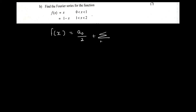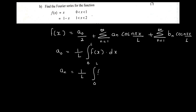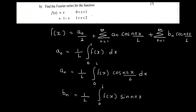f of x equals a₀ by 2 plus summation n equal to 1 to infinity aₙ cos(nπx/l) plus summation n equal to 1 to infinity bₙ sin(nπx/l). The coefficient a₀ is equal to 1 by l integral 0 to l of f of x dx. aₙ is equal to 1 by l integral 0 to l of f of x into cos(nπx/l) dx. bₙ is equal to 1 by l integral 0 to l of f of x into sin(nπx/l) dx.